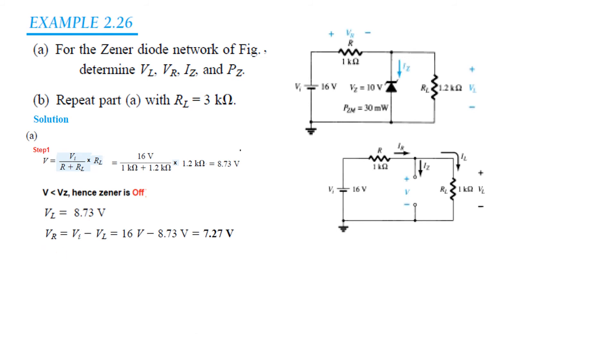And VR can be found by VI minus VL. VL we have found, VI is given. So VR is VI minus VL. So it is 7.27 volt. Then we find current I.